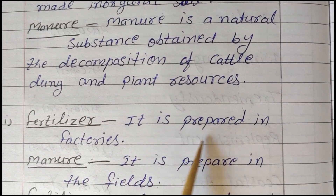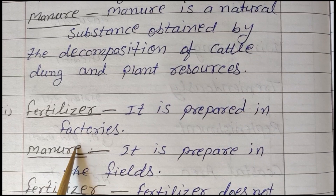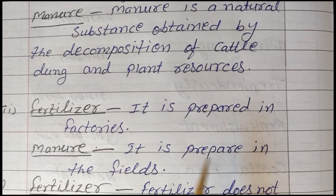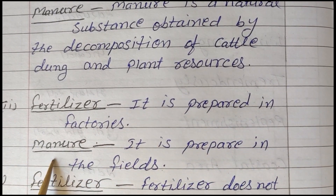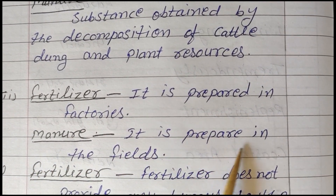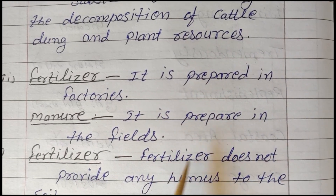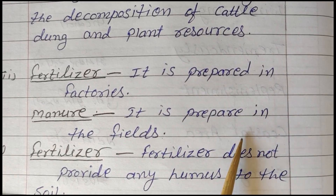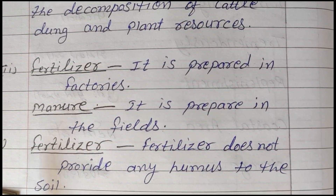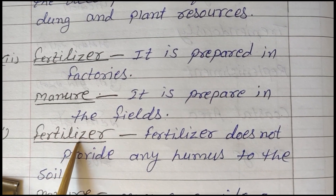Point 2 — Fertilizer: It is prepared in factories. (Fertilizer ko factories mein taiyar kiya jata hai.) Manure: It is prepared in the field. (Khad ko hum khet mein taiyar kar sakte hain.)